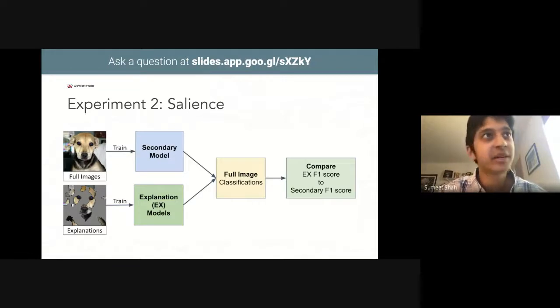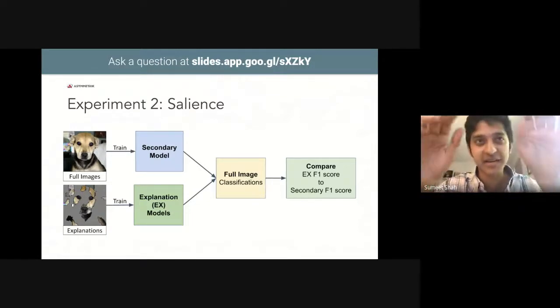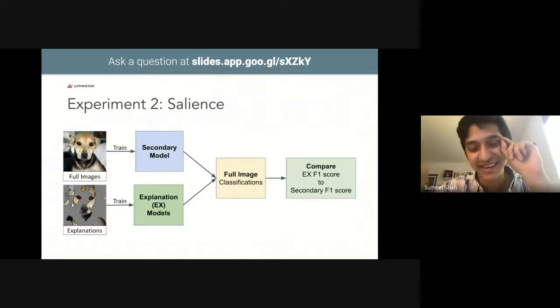The basic premise of this experiment is if person A knows math and they teach person B math, then you have person B teach person C math, you can use person C's understanding of math to judge how well person A taught person B.